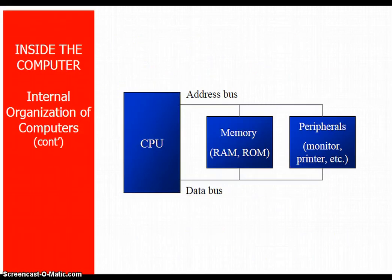When connecting the CPU, we need a data bus and address bus to connect any type of peripheral — for example, a monitor, printer, switching devices like a keyboard, and memory, which includes RAM and ROM. Multiple control signals, known as the control bus, are also used.